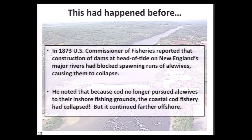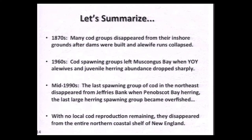If you look at the history, you find that a similar thing happened back in the post-Civil War period when U.S. Commissioner of Fisheries Baird reported to Congress that construction of dams at the head of tide had blocked off spawning runs of alewives, causing them to collapse, and in turn, cod no longer returned to the shore because they had inadequate numbers of prey. In northern Maine, that prey were fingerling alewives and fingerling herring. He also observed that their cod fishery continued somewhat farther offshore.